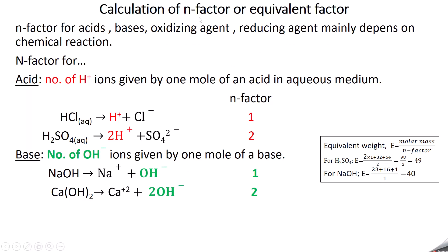To calculate N factor for acids: the number of H⁺ ions, or the basicity, given by one mole of the acid gives the N factor. For example, hydrochloric acid in aqueous medium decomposes to form H⁺ and Cl⁻. Only one H⁺ ion is formed, so its N factor is 1.